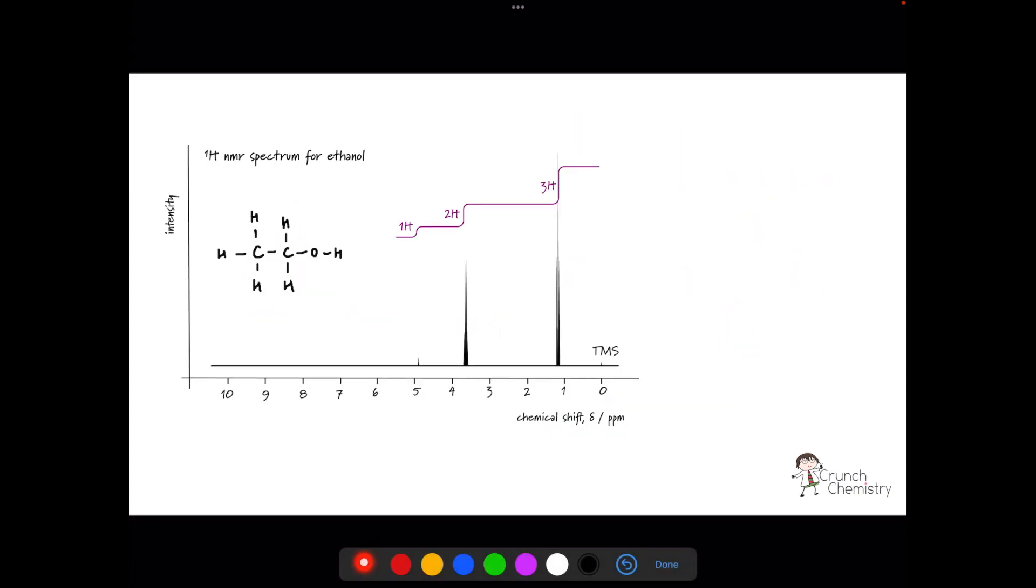The proton NMR spectrum for ethanol has three signals. This is telling us we have got three distinct proton environments in our molecule. Now, the height of each peak, or technically the area under each peak, is proportional to the number of nuclei in each environment. And this information is collated and presented in terms of an integration curve. Although at A-level, things are much more simple because they simply write the number of protons in each environment above the signal. So let's link our spectrum back to our molecule.